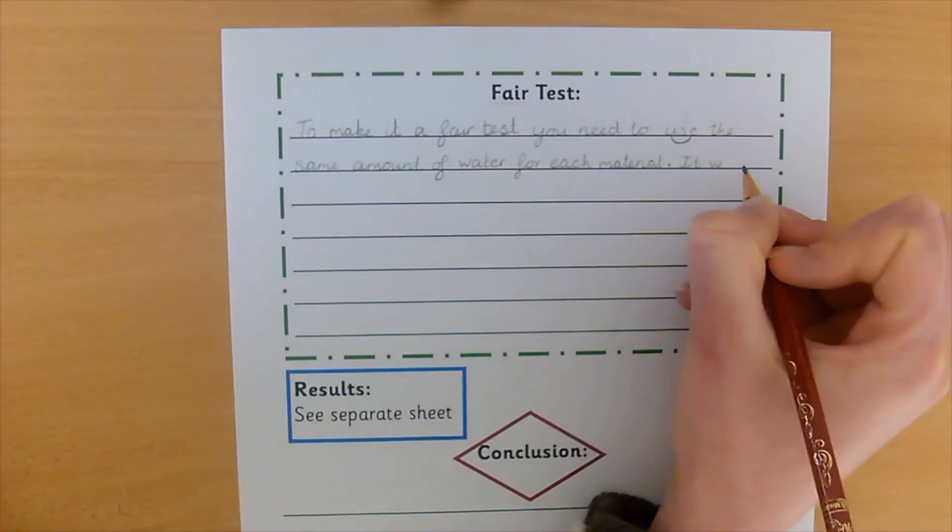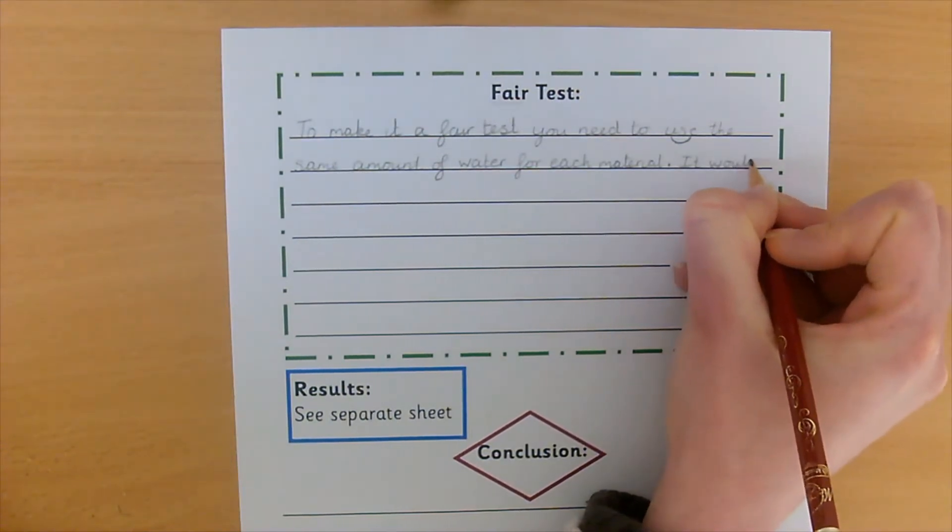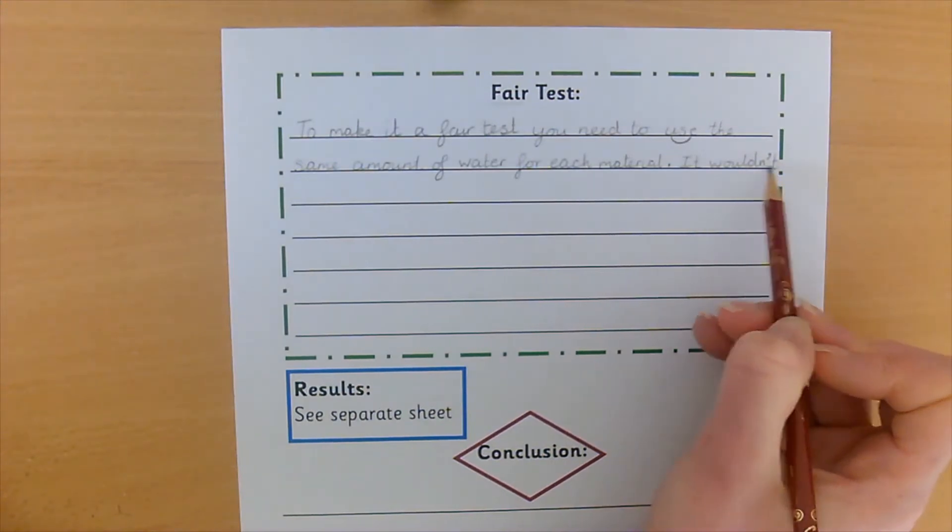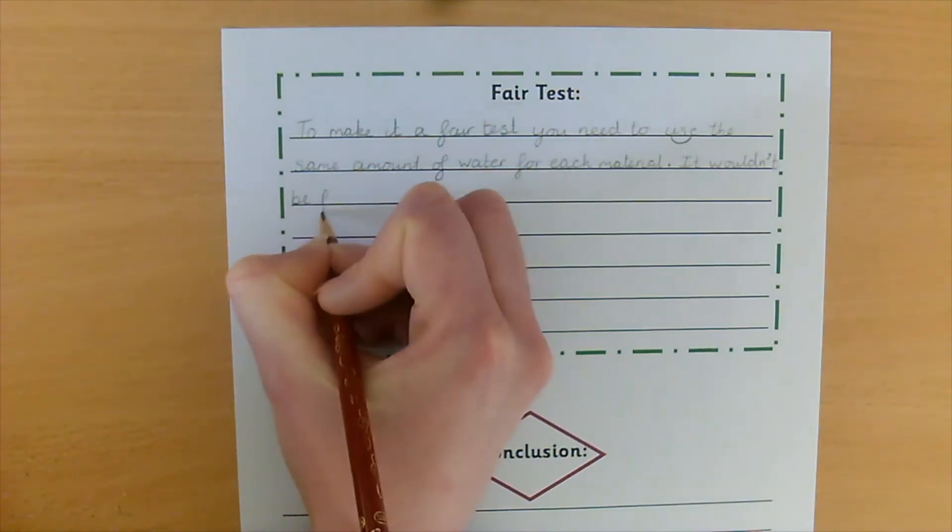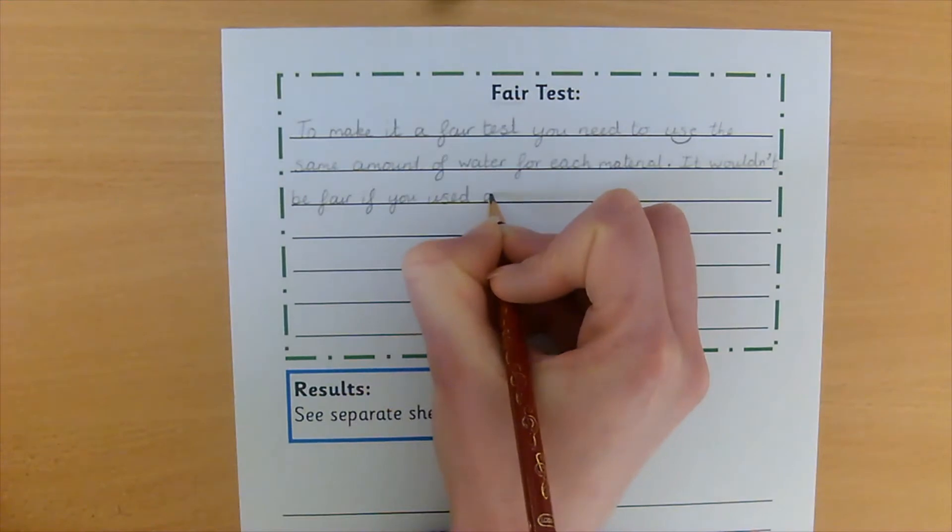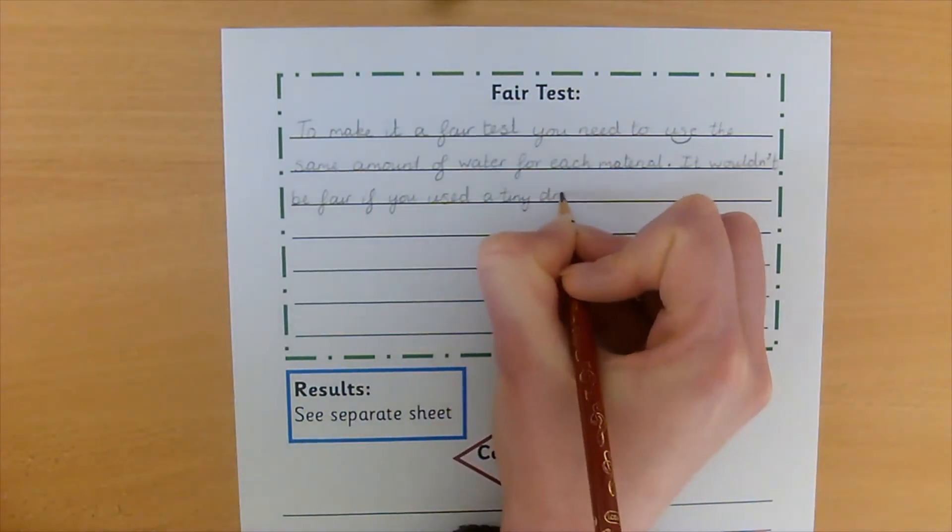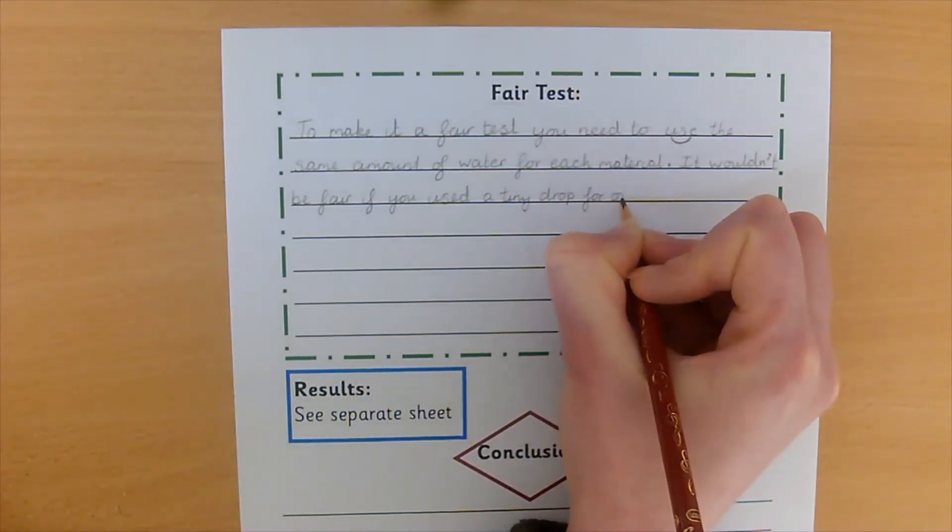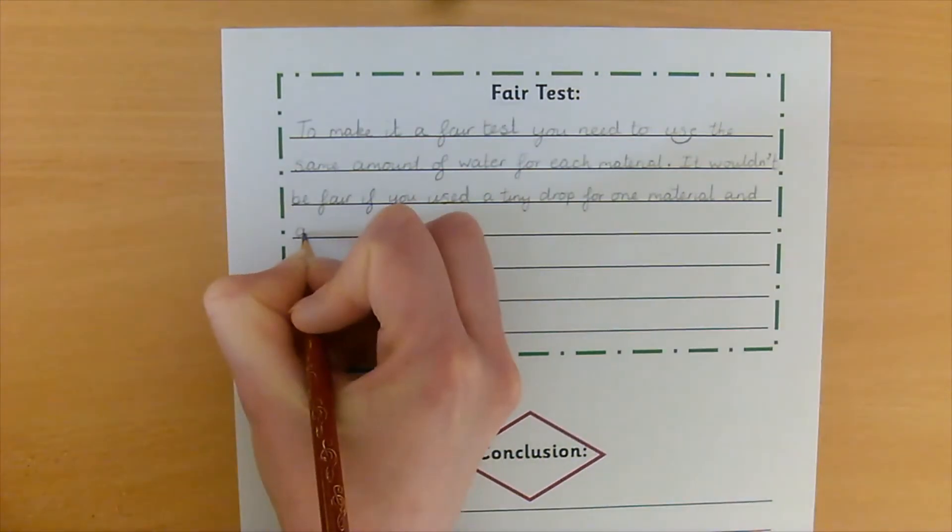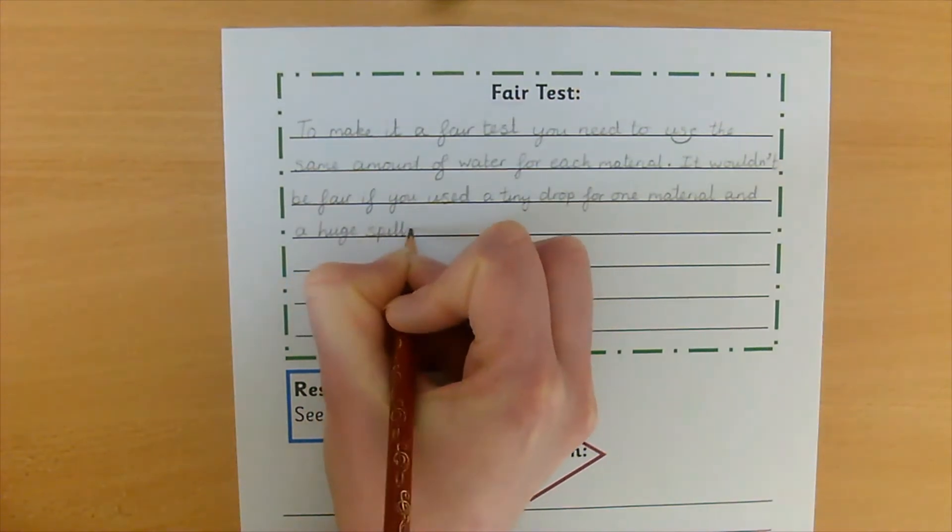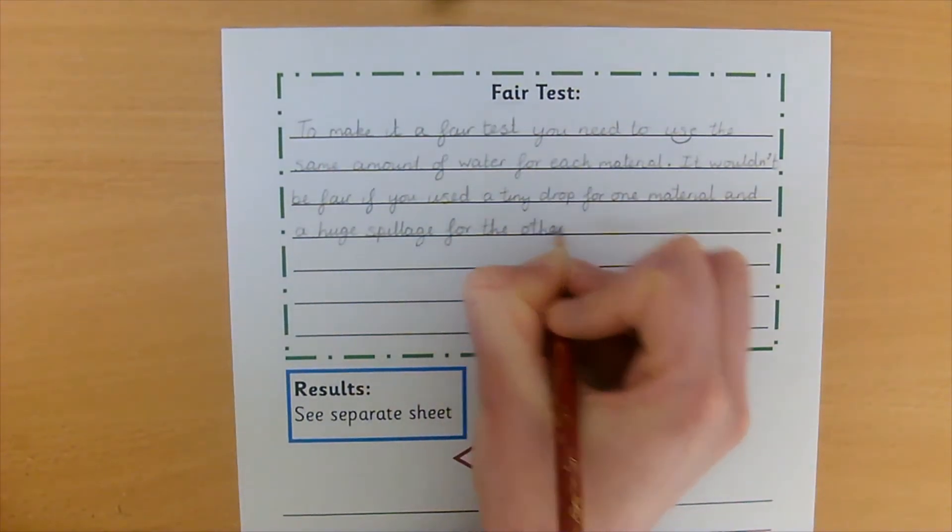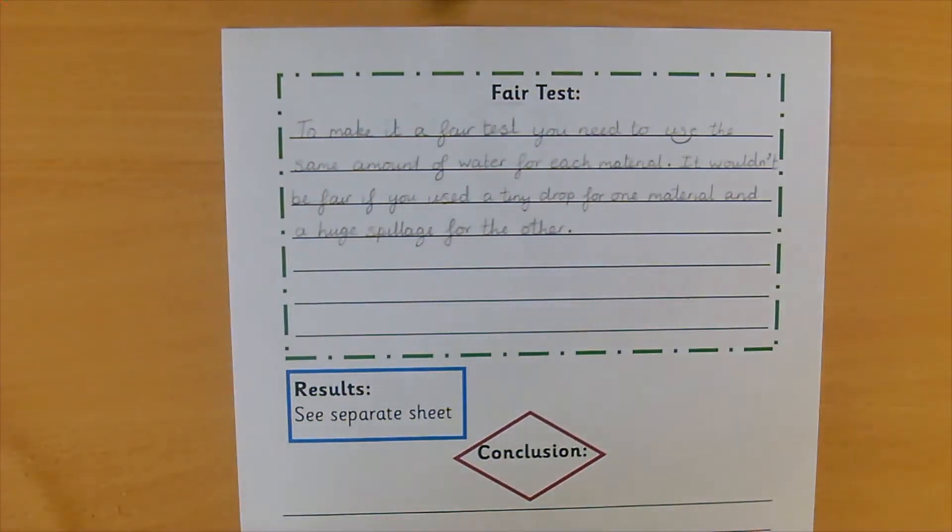It wouldn't, which is short for would not. So I'm going to use an apostrophe. There's would. That apostrophe replaces the letter O in would not. It wouldn't be fair if you used a tiny drop for one material and a huge spillage for the other. Full stop. Okay, so that's the first way of making it a fair test.